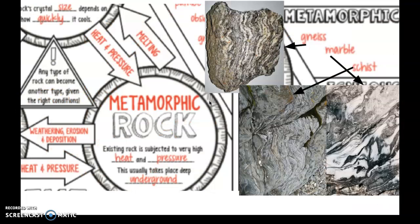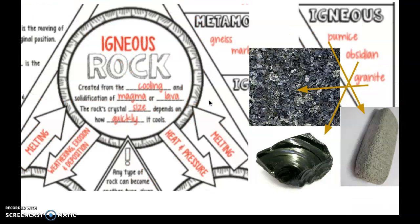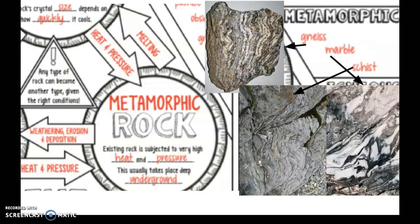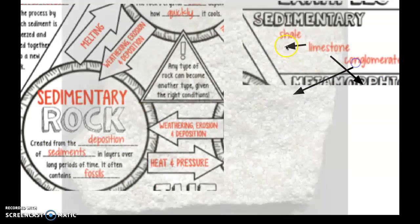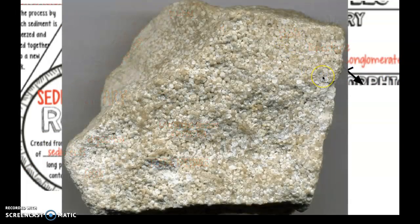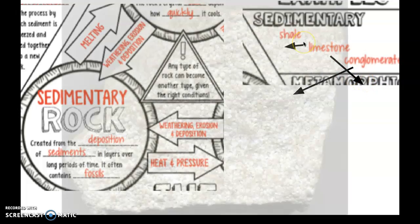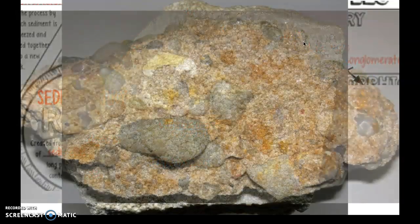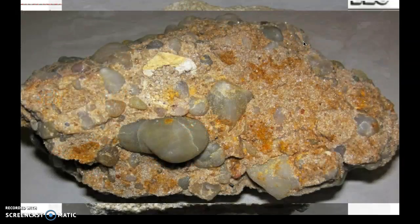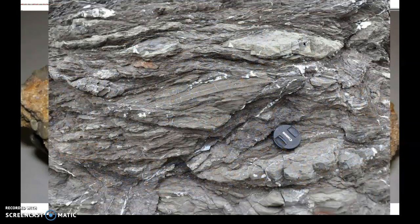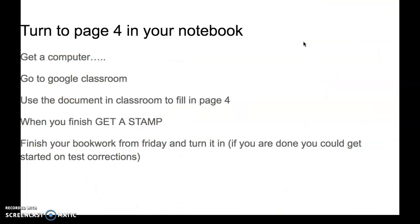Those examples of rocks need to be written down in your notes as well. The igneous ones were pumice, obsidian, and granite. Metamorphic: gneiss, marble, and schist. Sedimentary: shale, limestone, and conglomerate. I believe this is limestone, this is conglomerate, and this is shale — but I'm not entirely sure.